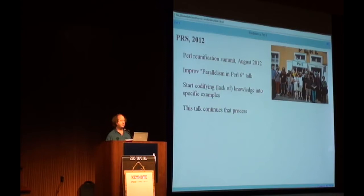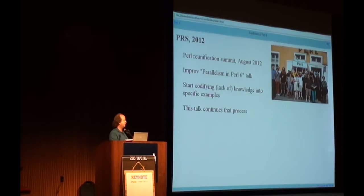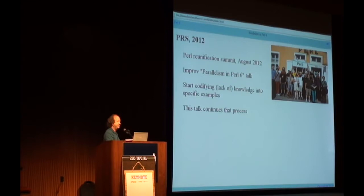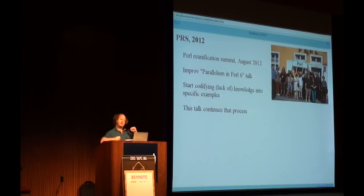Last summer, we had the Perl Reunification Summit in August. Thank you to Liz and Wendy for hosting that. During the summit, a lot of the Perl 5 folks said one of the features about Perl 6 they're really interested in is its support for parallelism, and could somebody please explain how parallelism in Perl 6 works? So I quickly improvised a talk with the stuff I knew off the top of my head, and I realized it would really help to just catalog what we already know — and so this talk was born.